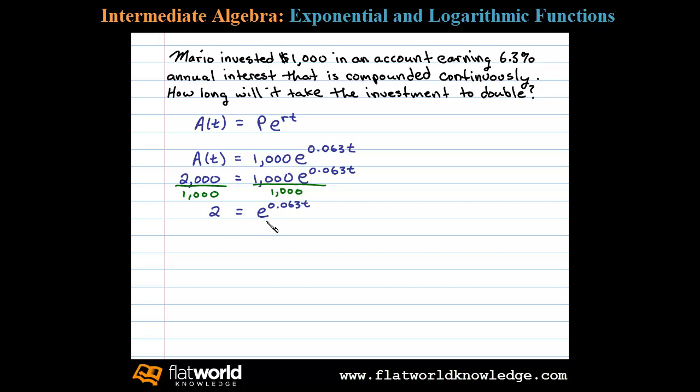Now at this point we apply the one-to-one property for logarithms. In this case, because the base is e, I'm going to choose to apply the natural log to both sides. So we have the natural log of 2 equals the natural log of e to the 0.063 times t power. Now we do that so that we can then apply...